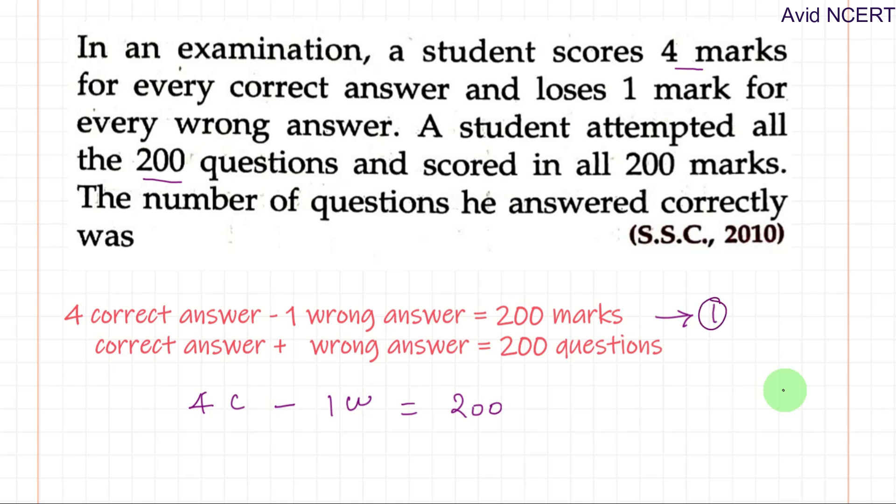So this is the first equation, and second equation is 1C plus 1W. 1C plus 1W is all together. So 1C plus 1W equals 200 questions.